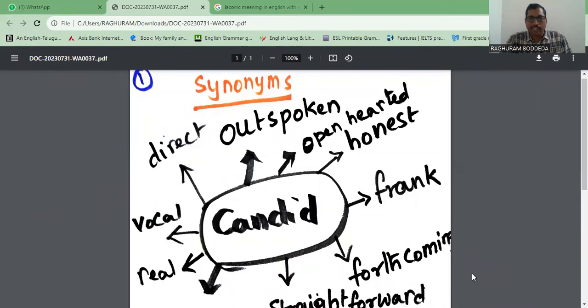Let us start with one word and how these words are going to help you understand and avoid the monotonous use of the same word many times in your writing. The word which you can see in the center is 'candid.' The word has many meanings contextually.